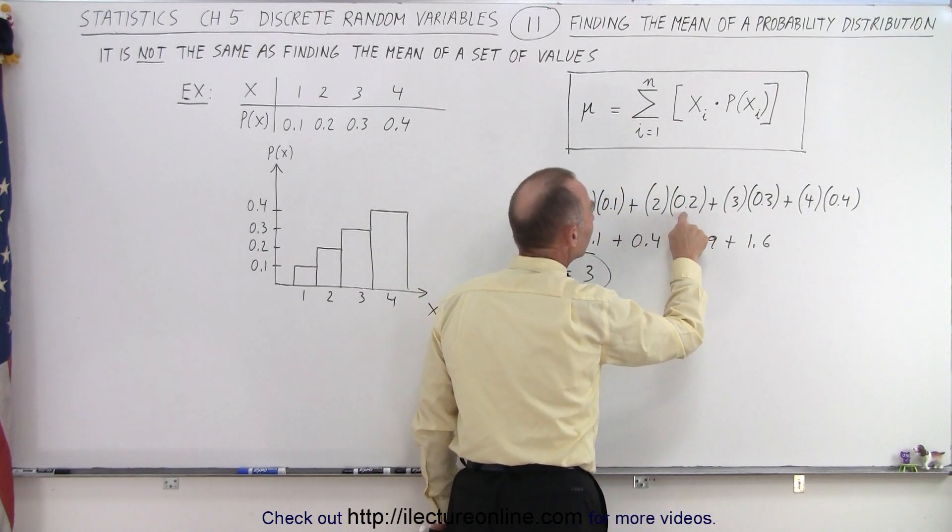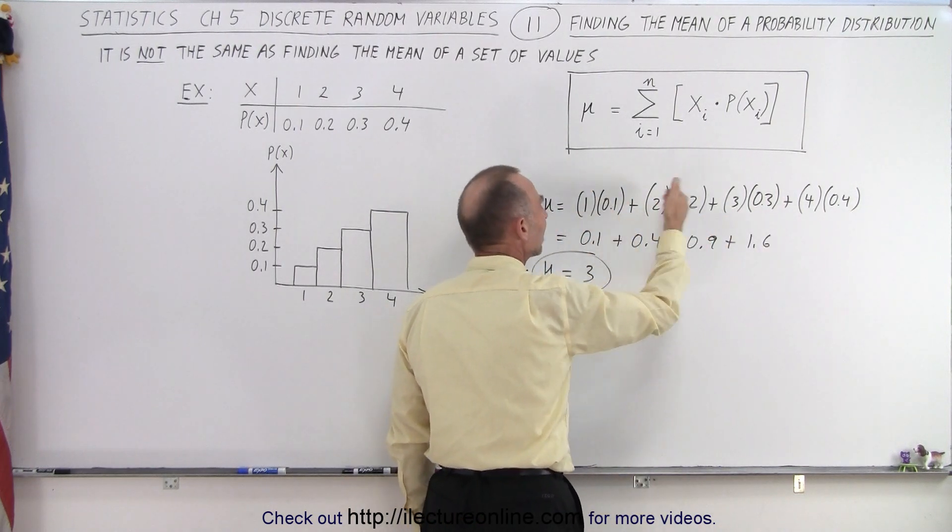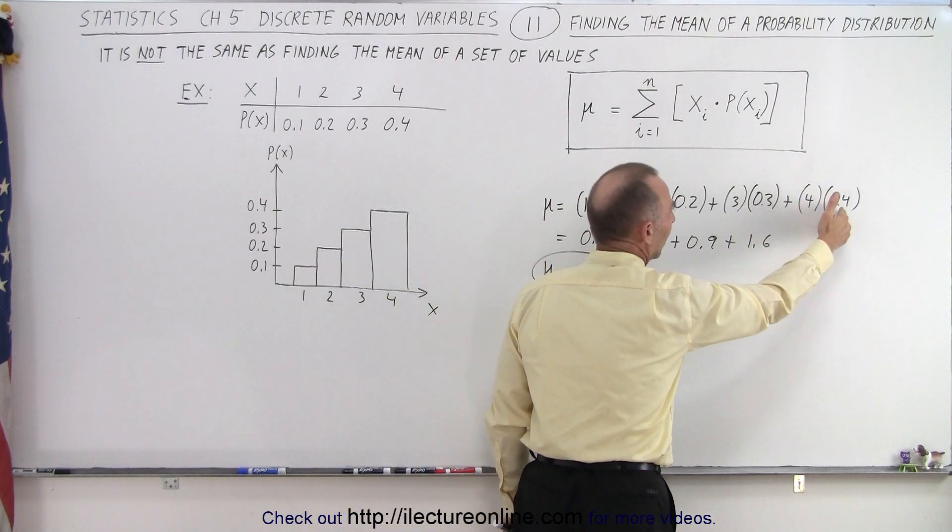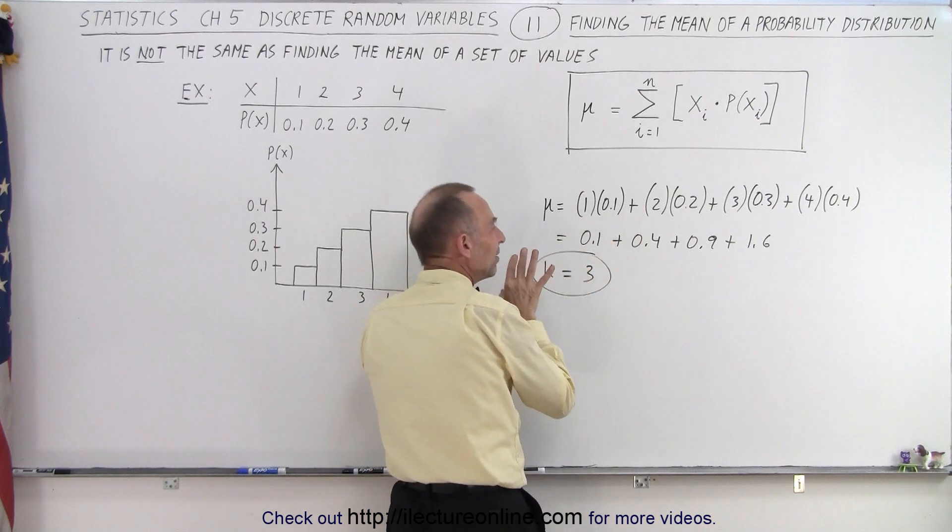Think of the probability, the number associated with the probability of obtaining that value for x, as kind of a weighting factor. So there's 4 times as much possibility that x will be 4 than when x equals 1, which means that that number,